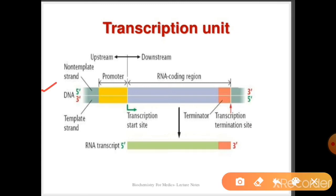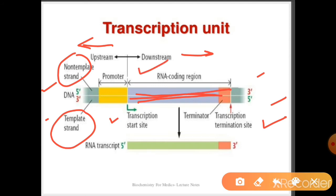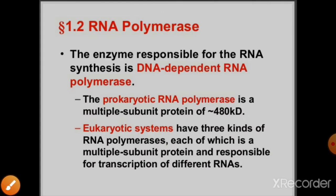To summarize the transcription unit: the 3' to 5' strand is the template, the 5' to 3' strand is the non-template or coding strand. Moving upstream means going toward higher numbers (5'); downstream means toward lower numbers (3'). In the diagram, the yellow part is the promoter, the red part is the terminator where transcription ends, and the central part contains the structural genes - the RNA coding region. The RNA transcript formed is in the 5' to 3' direction.